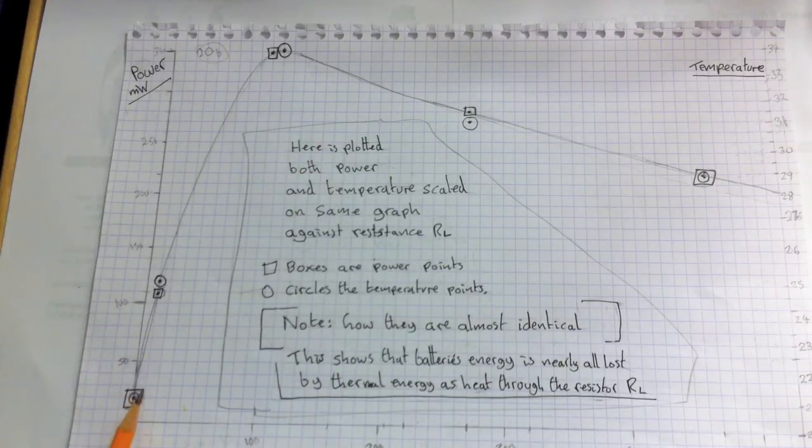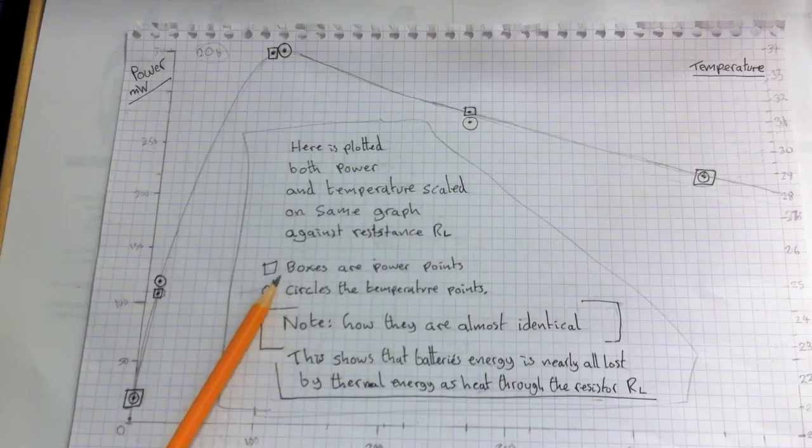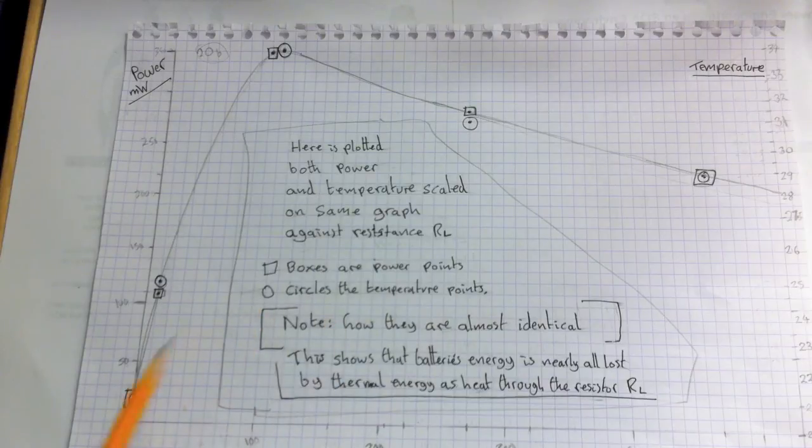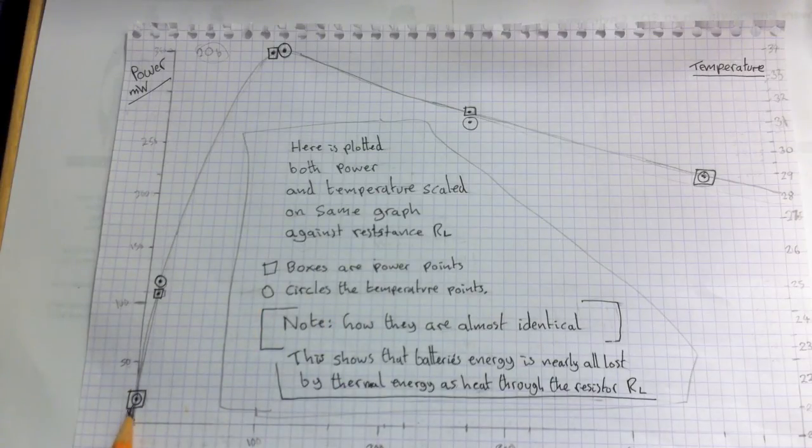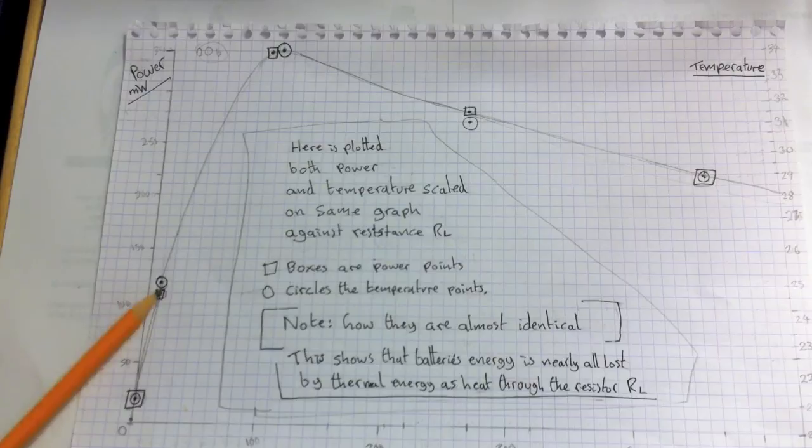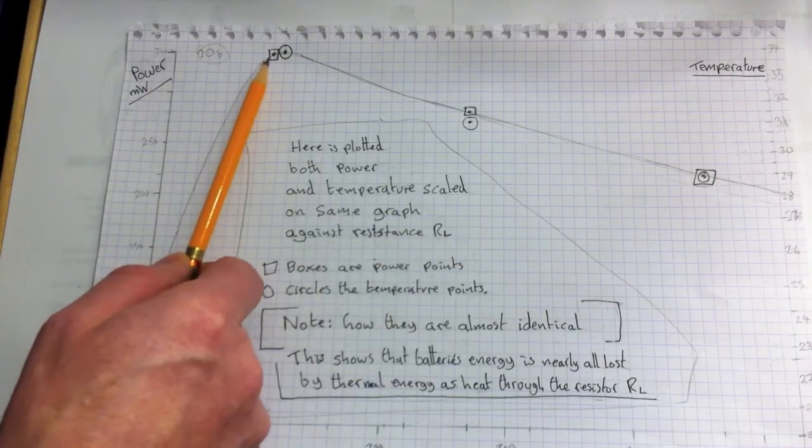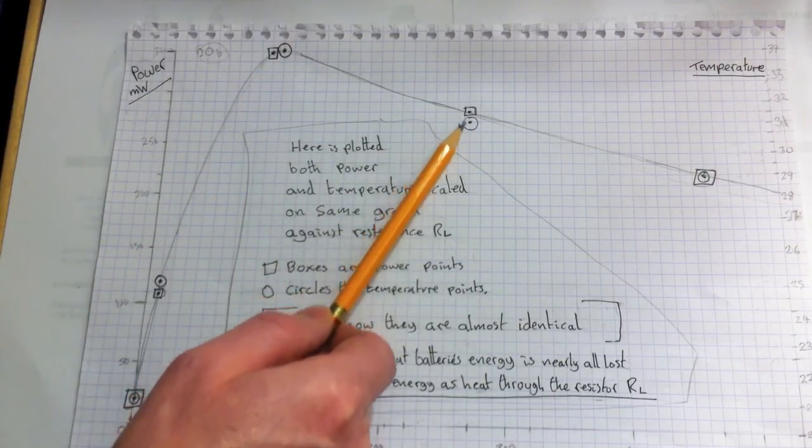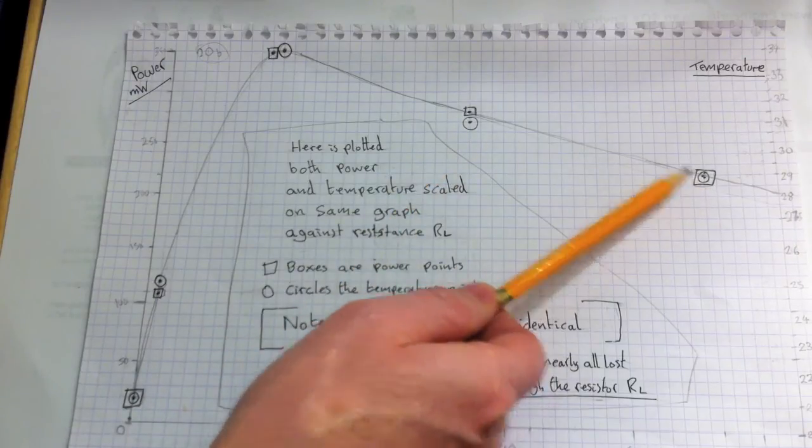So the squares here, these are the power, these are the tabulated power values. And the circles are the tabulated temperature values. And you can see here, look, they're both on top of each other. This one, they're very close. Here at the peak of this curve, they're very close again. And here they're very close. Here they're on top of each other.